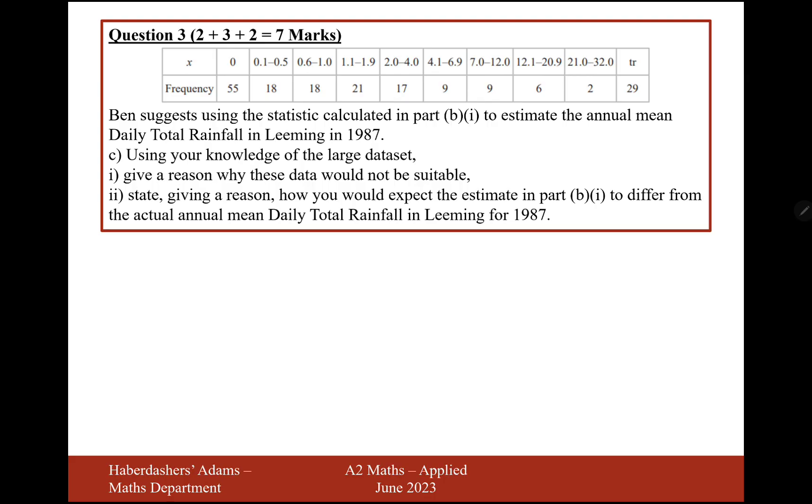Ben suggests using the statistics calculated in part B to estimate the annual mean daily total rainfall in 1987. Use your knowledge of the large data set, giving a reason why this data would not be suitable. What Ben is getting at is that we're going to use this data to estimate the annual mean daily total rainfall in 1987, and that wouldn't be correct because the data